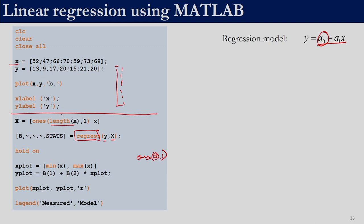The ones() function generates as many rows and columns as required. We write ones(length(x), 1) — so even if the vector x changes, it will automatically adjust. This gives us a column of ones. So we are constructing the capital X matrix by stacking the column of ones with the x vector containing the 7 data values: 152, 147, 166, 170, 159, 173, and 169.